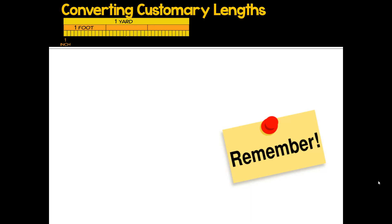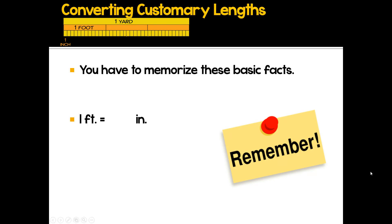You see up at the top a picture showing you the different comparisons between these customary lengths. These are facts that you have to memorize. Once you have these three basic facts memorized, the rest becomes super easy. We have one foot — the feet are shown in orange. One foot is 12 inches.